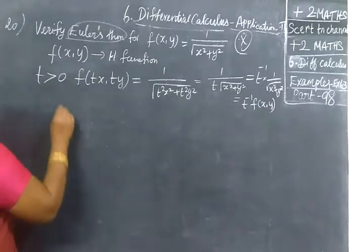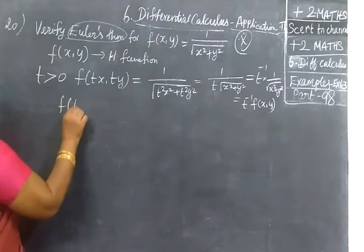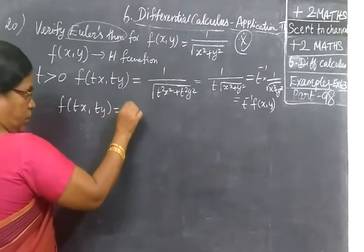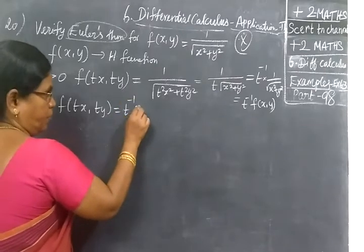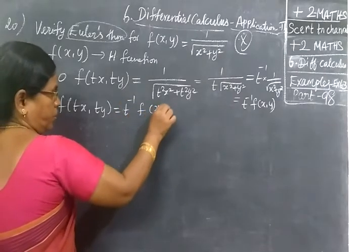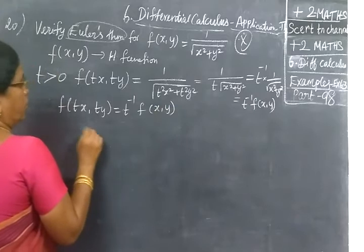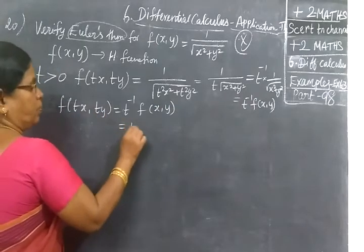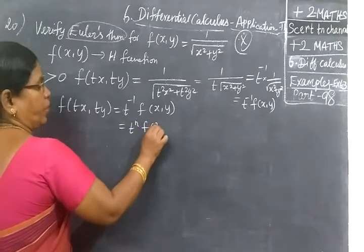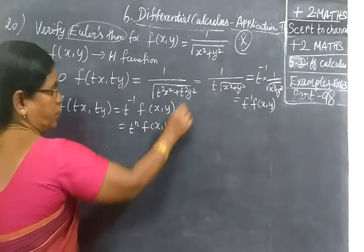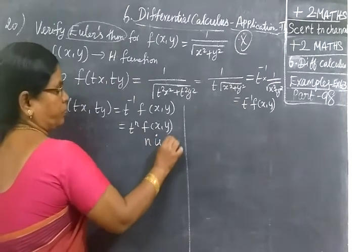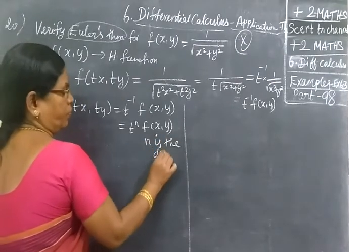So we have started as f(tx, ty) equal to t^(-1)f(x,y). Now going to see here what is this? f(tx, ty) equal to t^n f(x,y). Then, where n is the degree, degree of the function.